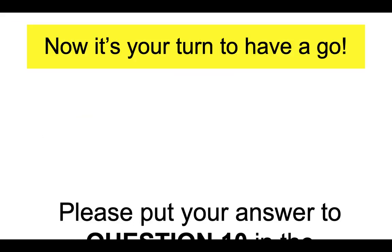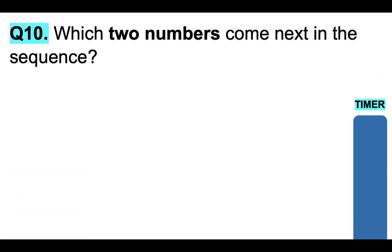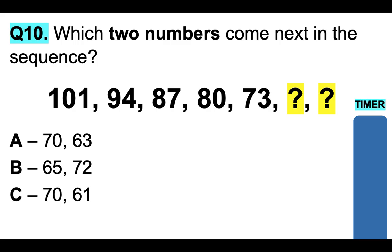Now it's your turn. Please put your answer to question 10 in the comments section below for marking. Which two numbers come next in the sequence: 101, 94, 84, 87, 80, 73? Is it A) 70 and 63, B) 65 and 72, C) 70 and 61, or D) 66 and 59? Here's your timer.